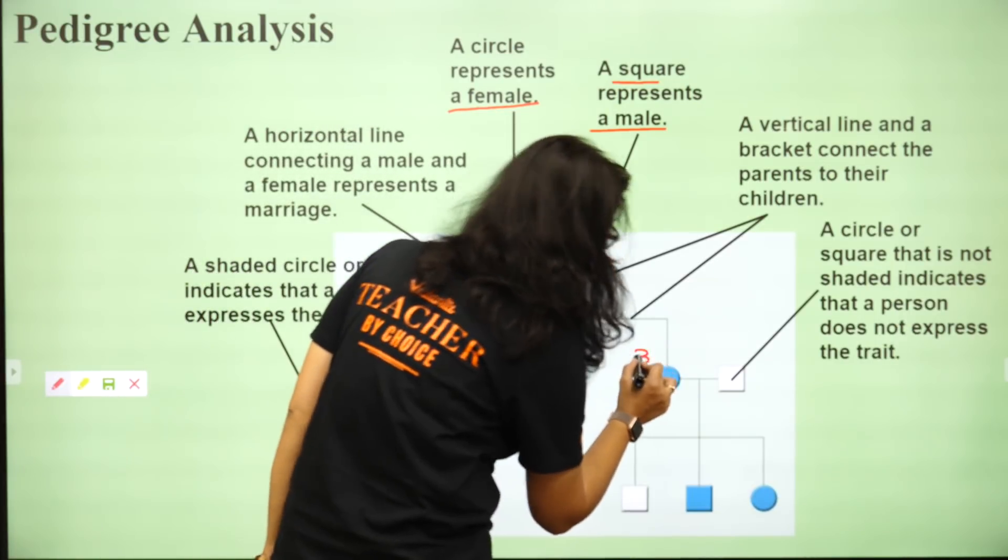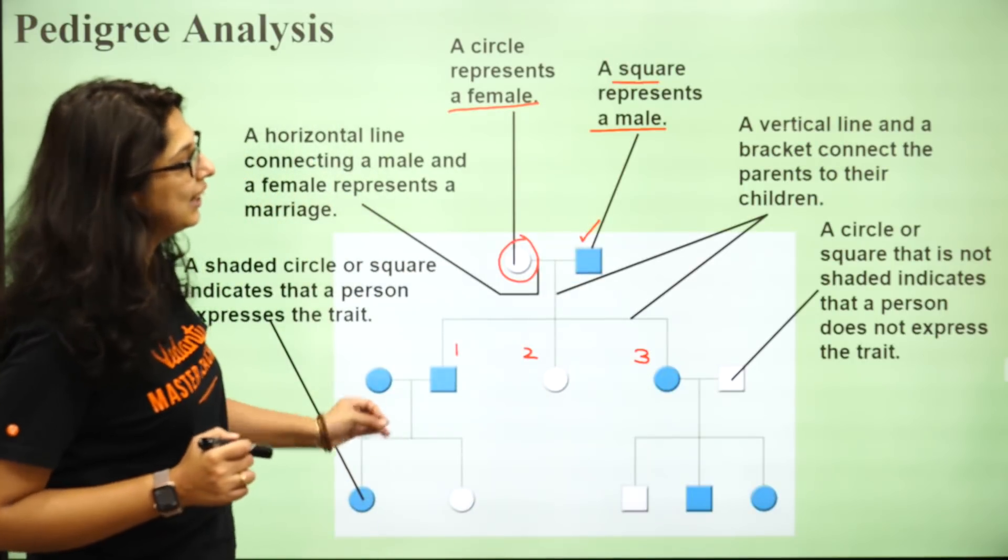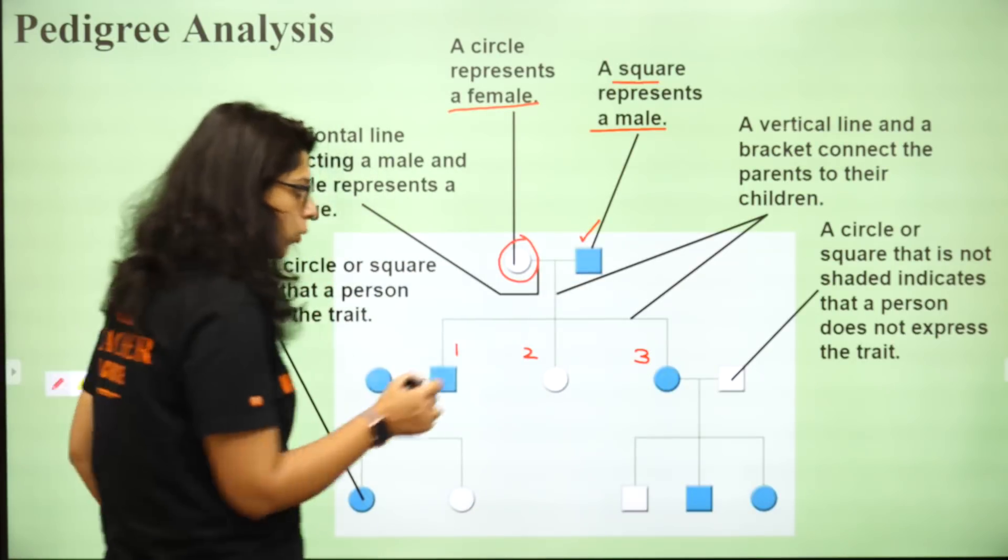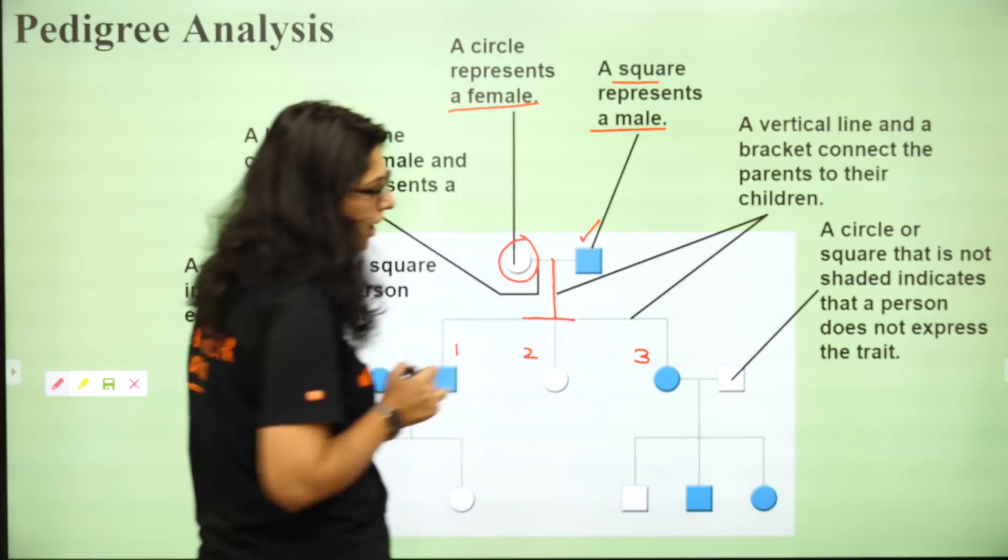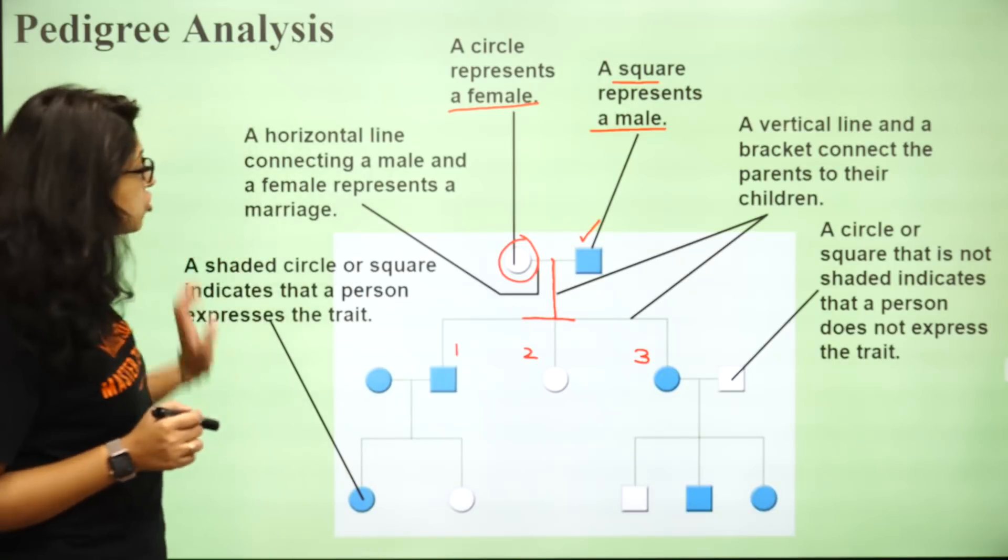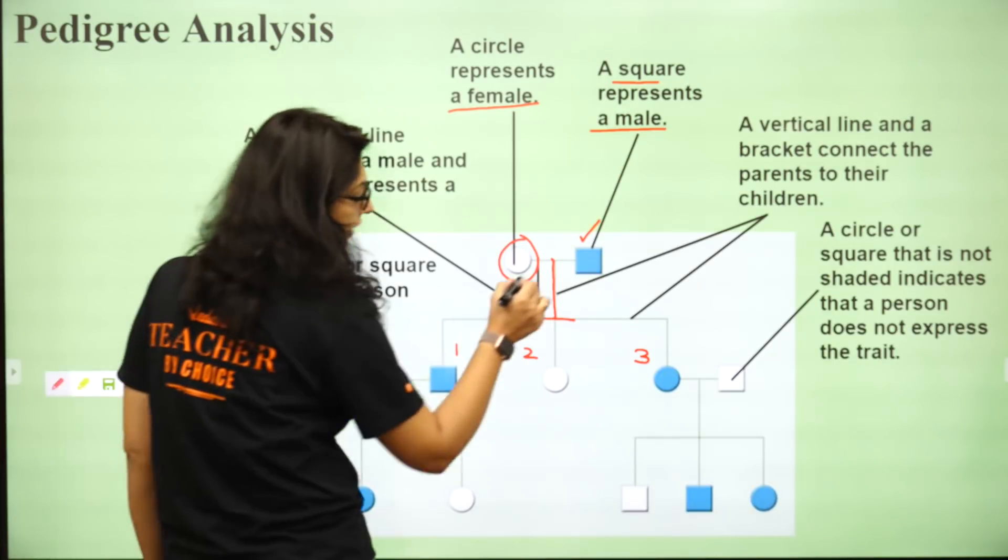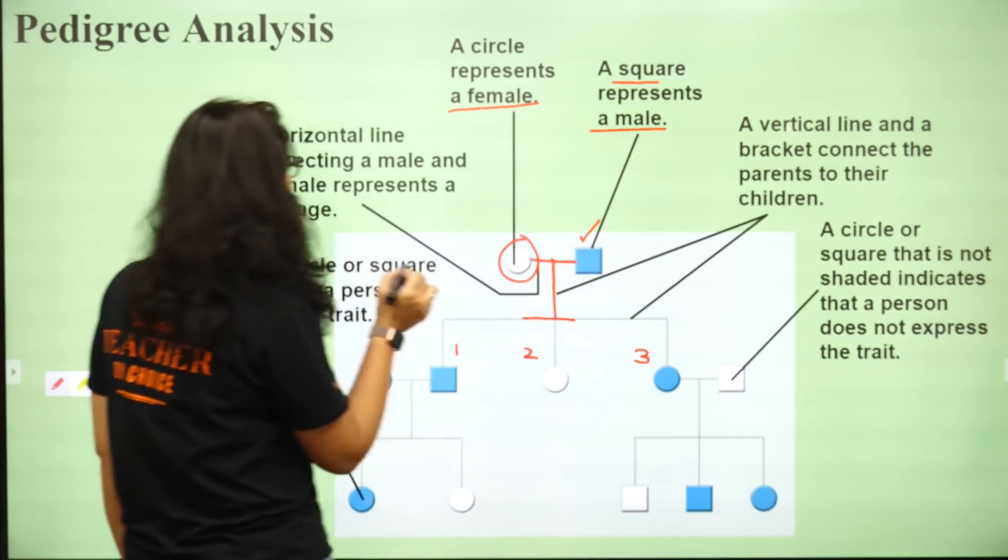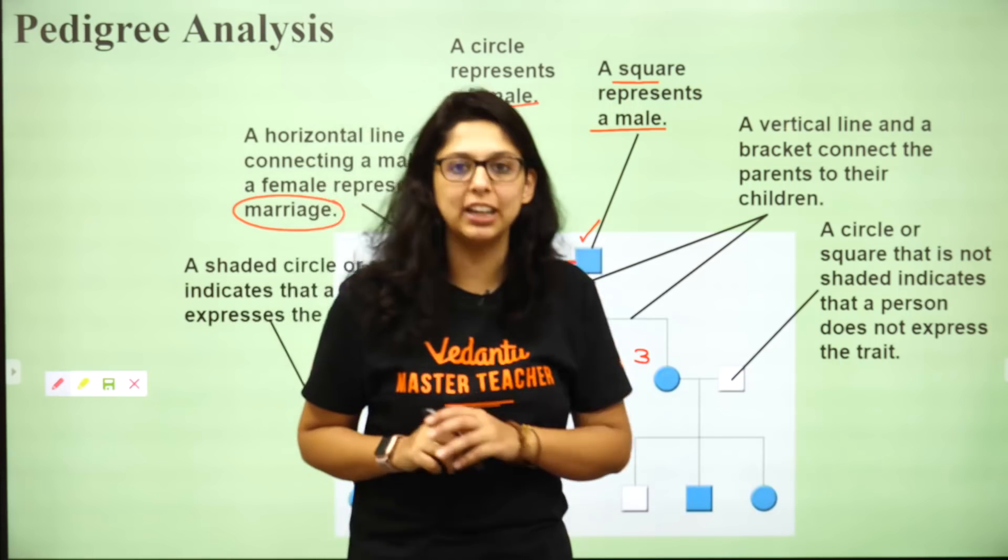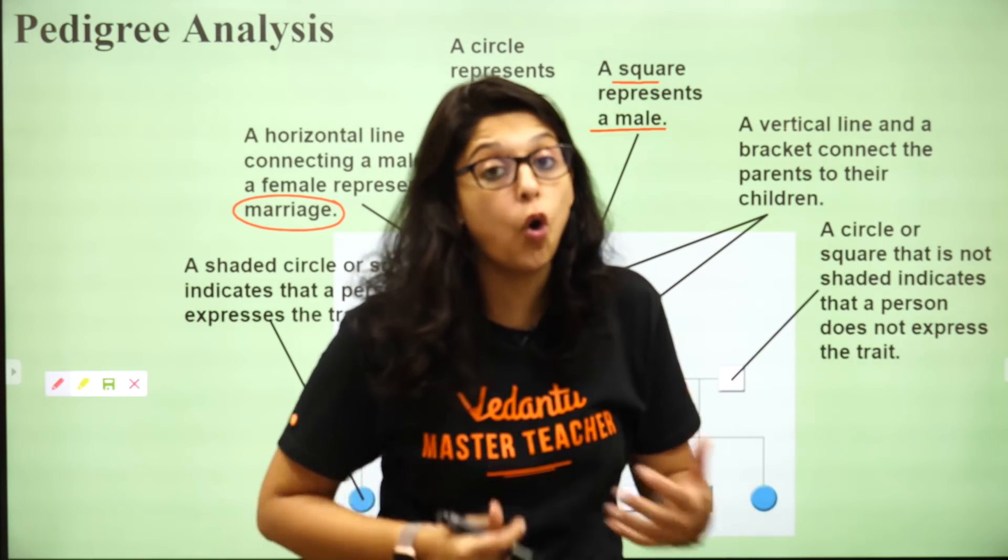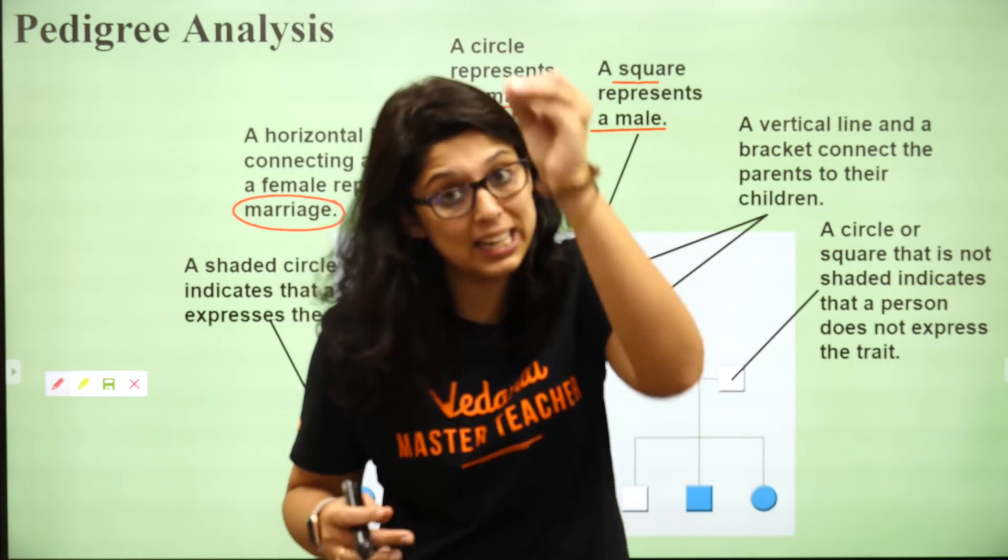So let's see that a vertical line in a bracket connect - this is the vertical line and the bracket. That means this bracket connects the parents to their children. A horizontal line connecting a male and female, this horizontal line signifies marriage I just told you. Agar do horizontal lines hongi, it is going to signify consanguinous marriages. Exam mein aata hai, likh lijiye. Consanguinous marriage means it's a marriage between closely related individuals.